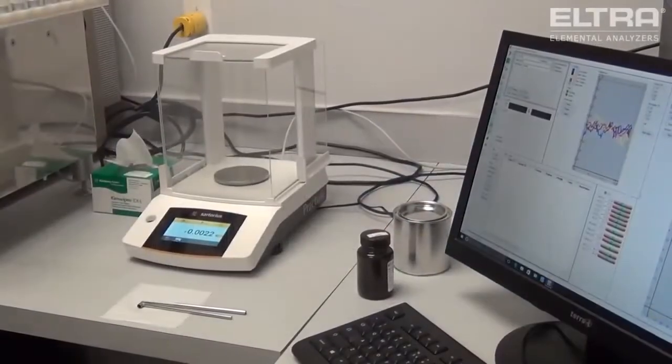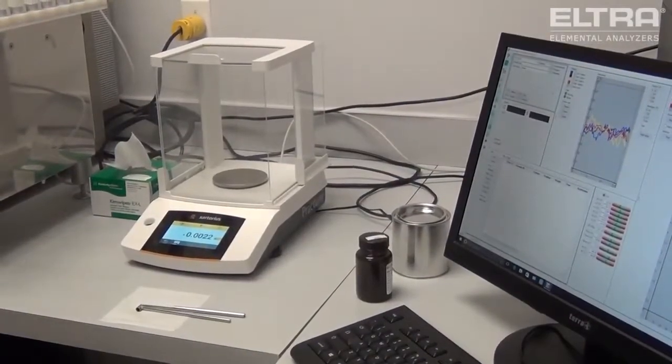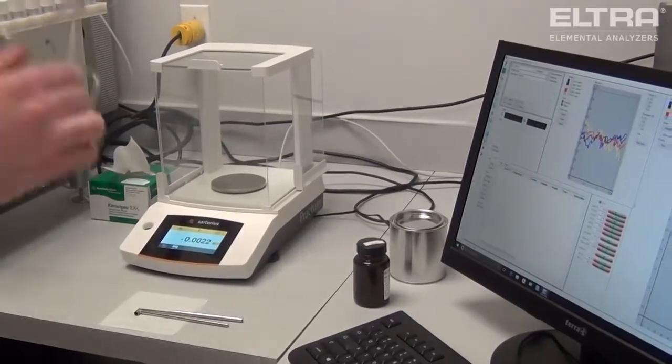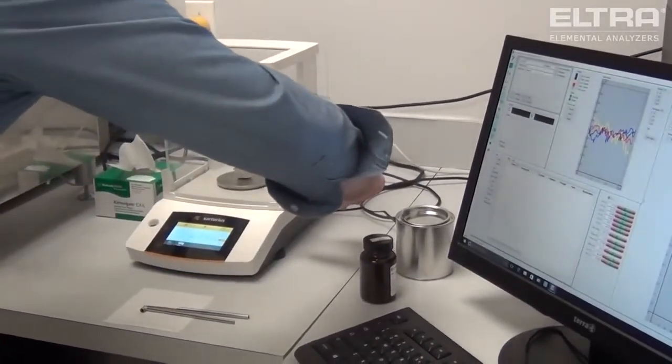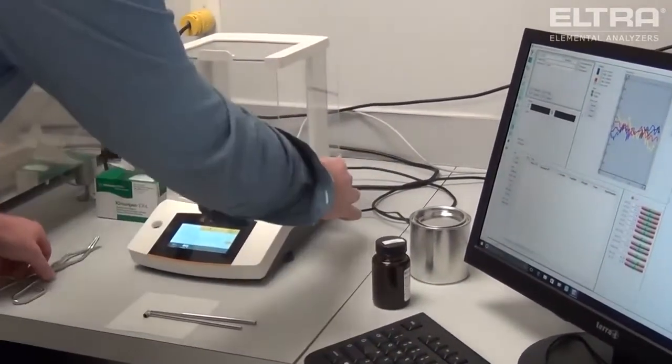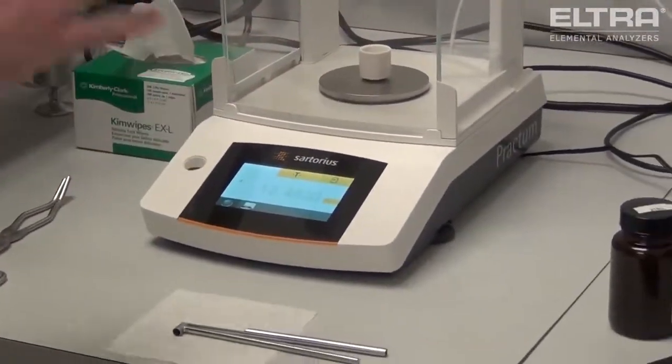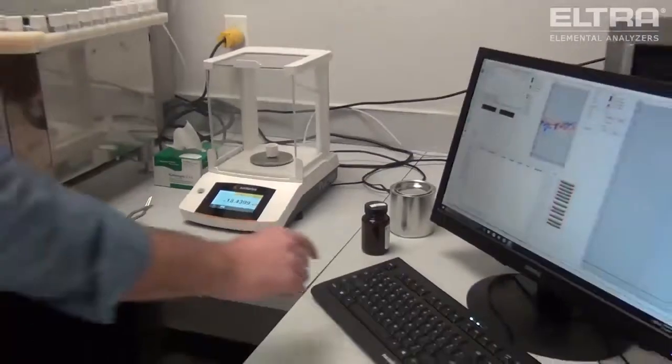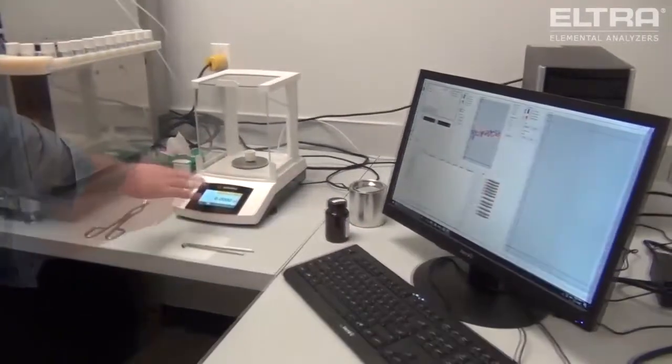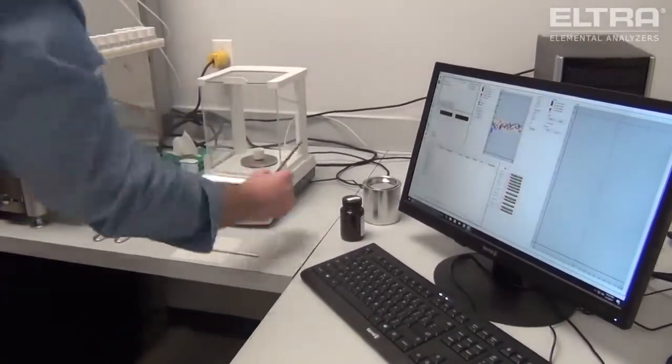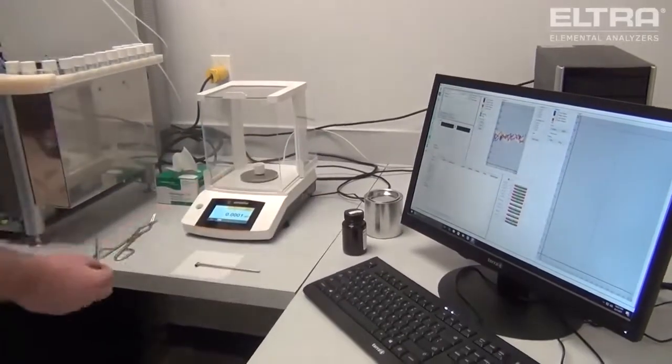Analysis with the CS-2000 is simple, easy, and very quick to do. Take your crucible, place it on the scale, and with the functionality between the software and the scale, taring the weight is as simple as pressing F6. The scale is now tared, and we can add our sample to the crucible.